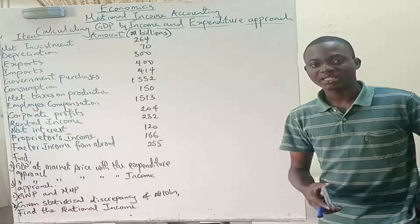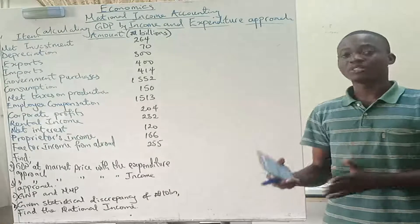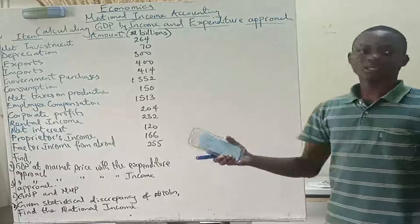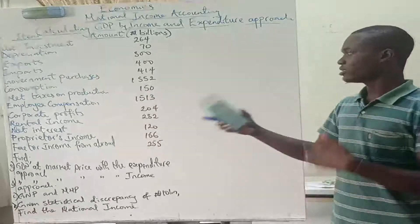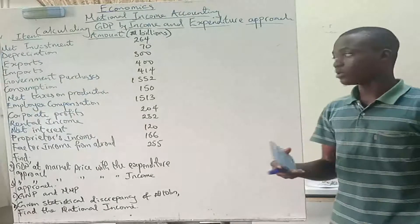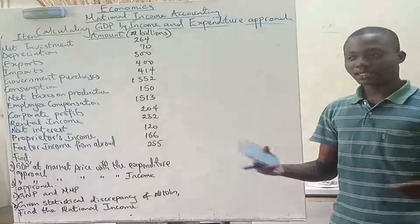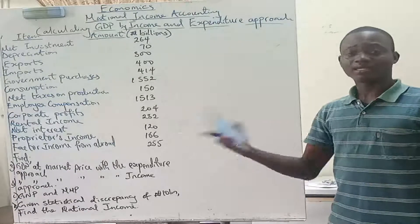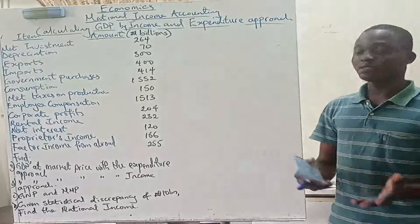Net investment is talking about the actual capital stock in a country — that is, investments in new capital stock allowing for depreciation of old capital stock. Net investment and depreciation together represent the change in capital stock. Employee compensation is what employees receive for working, which includes their wages, salaries, and social security benefits that firms pay into accounts on their behalf. If you're not working, you don't receive employee compensation.